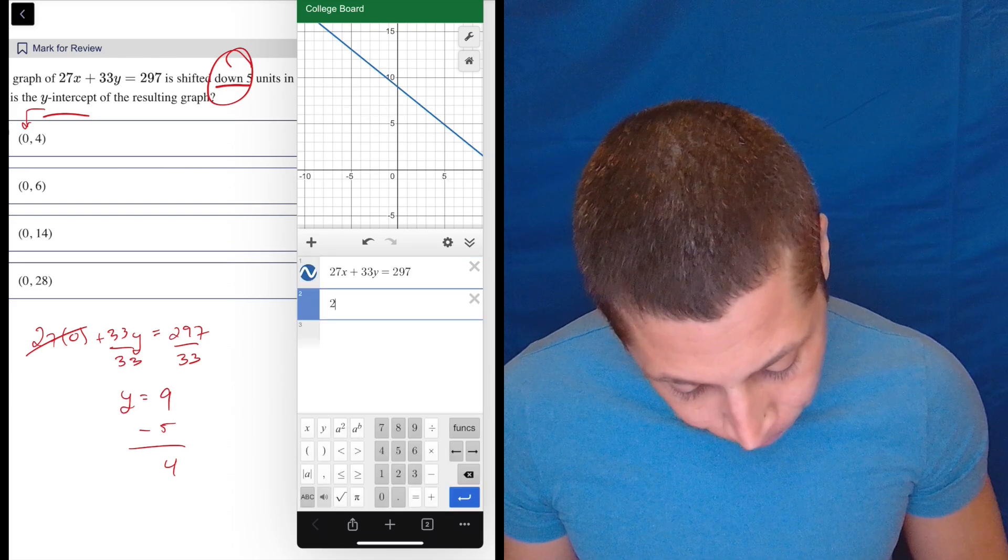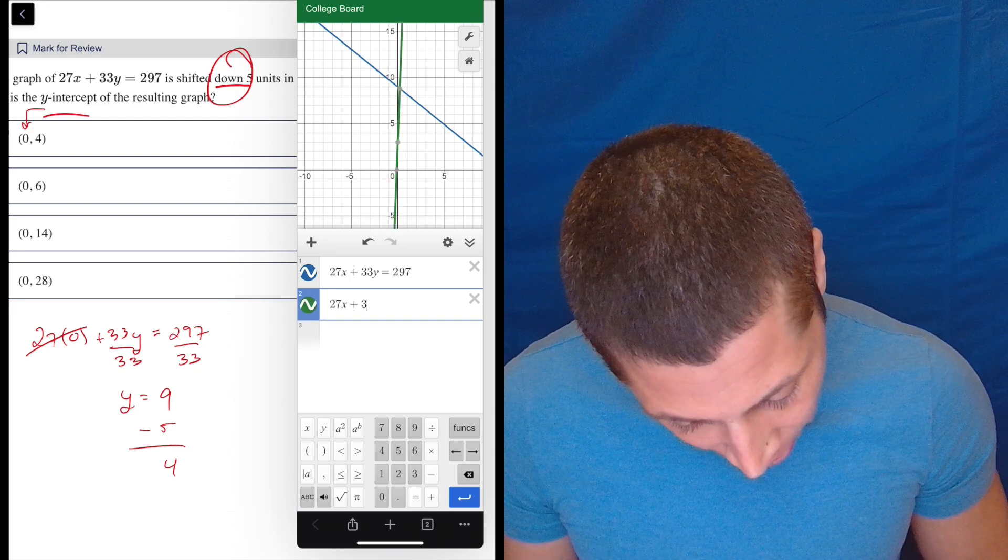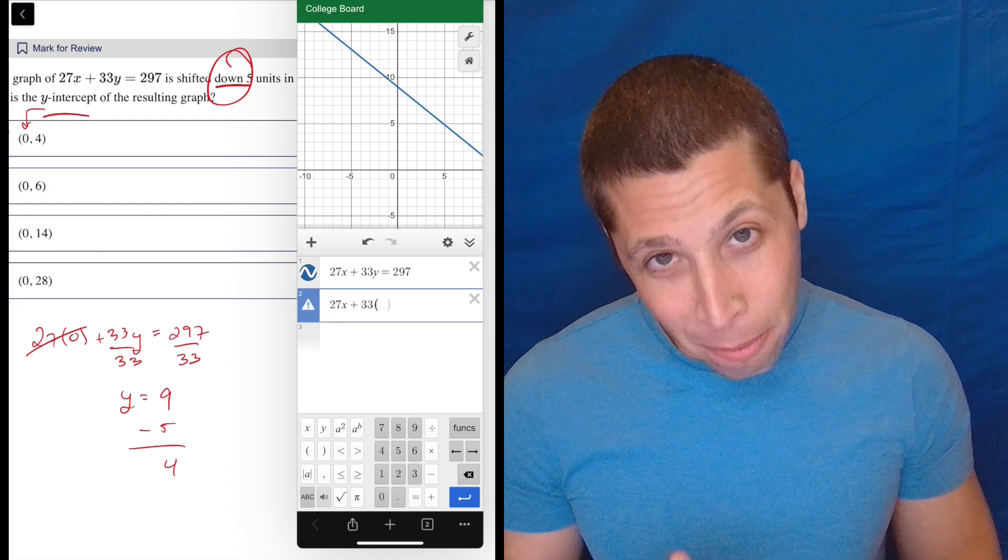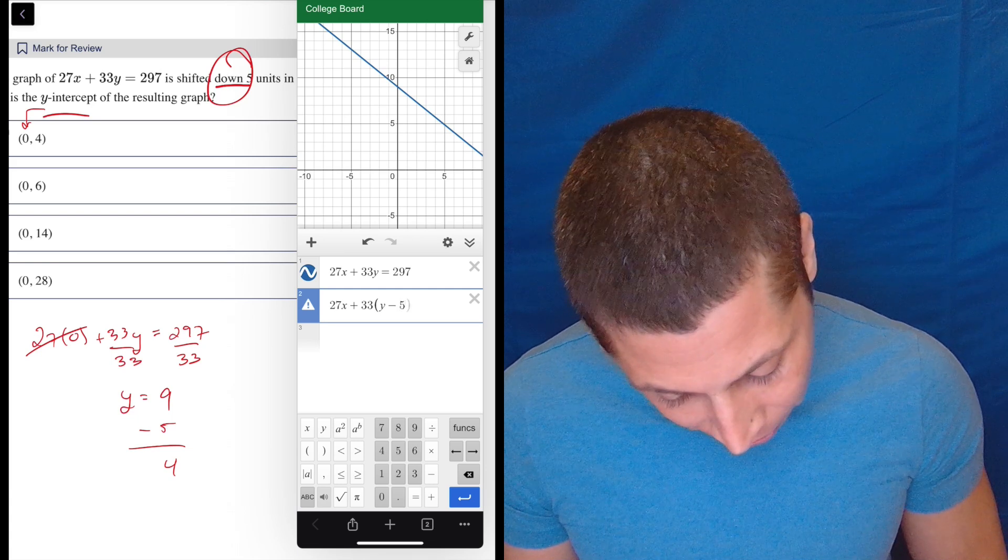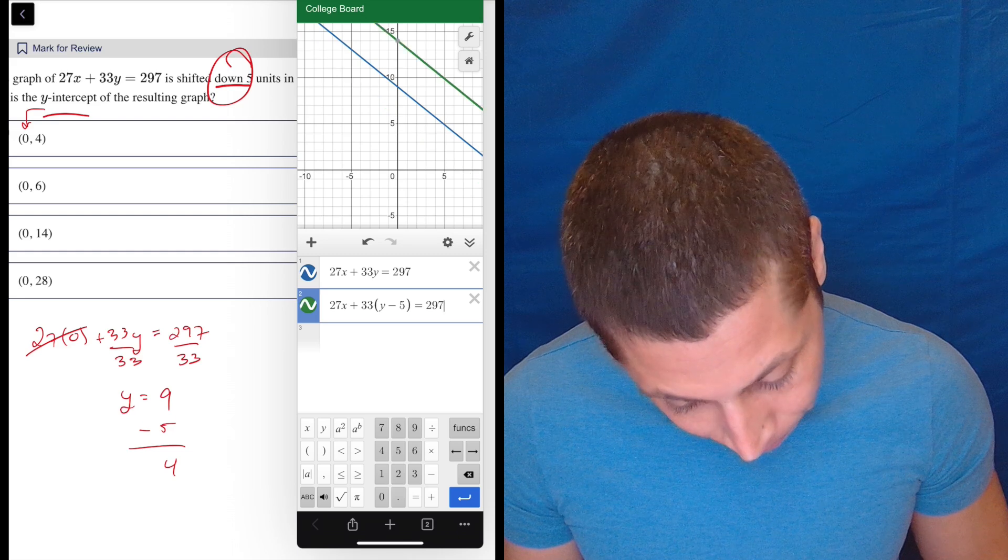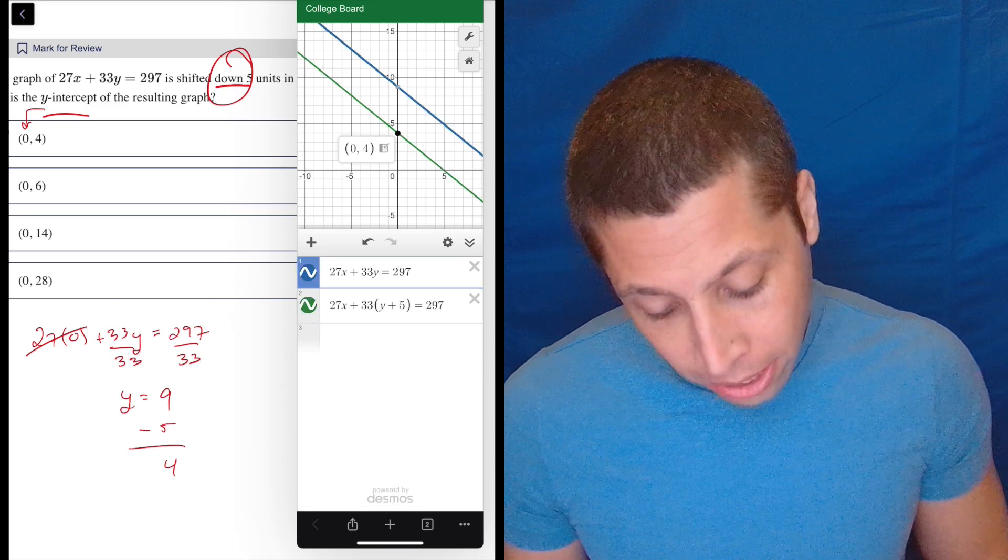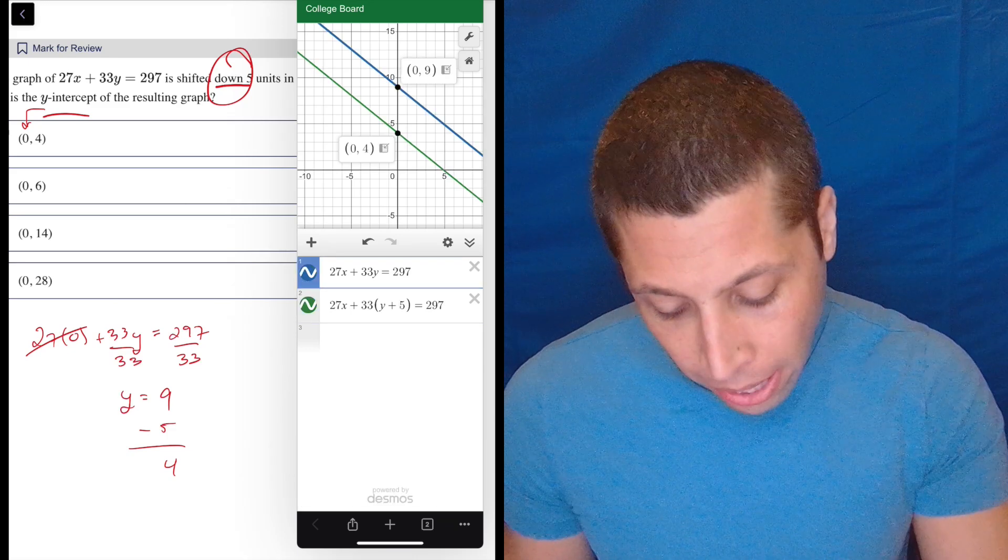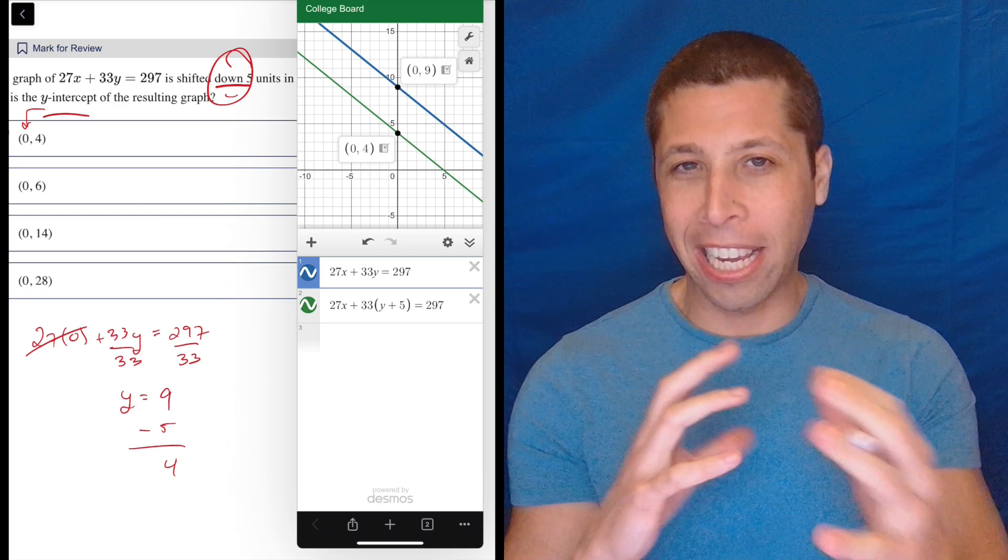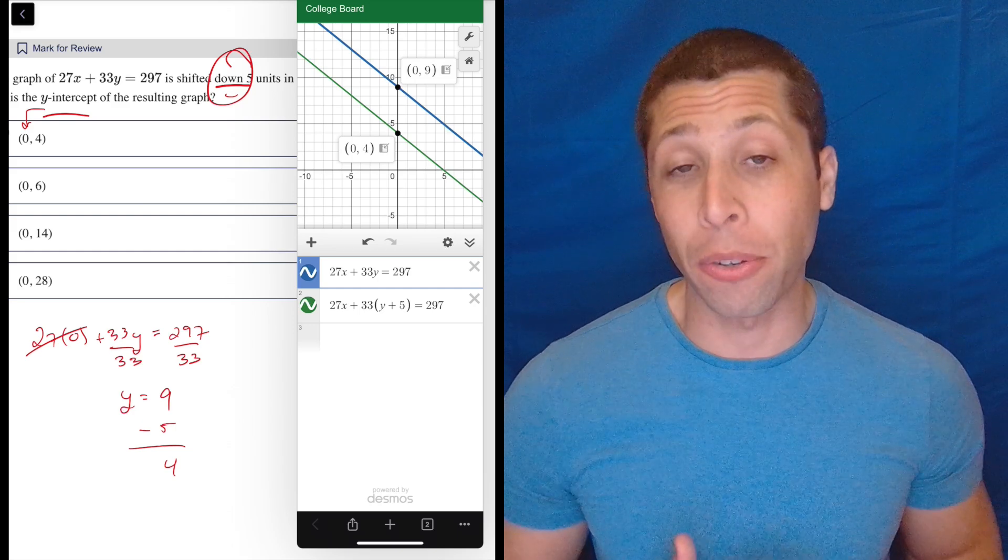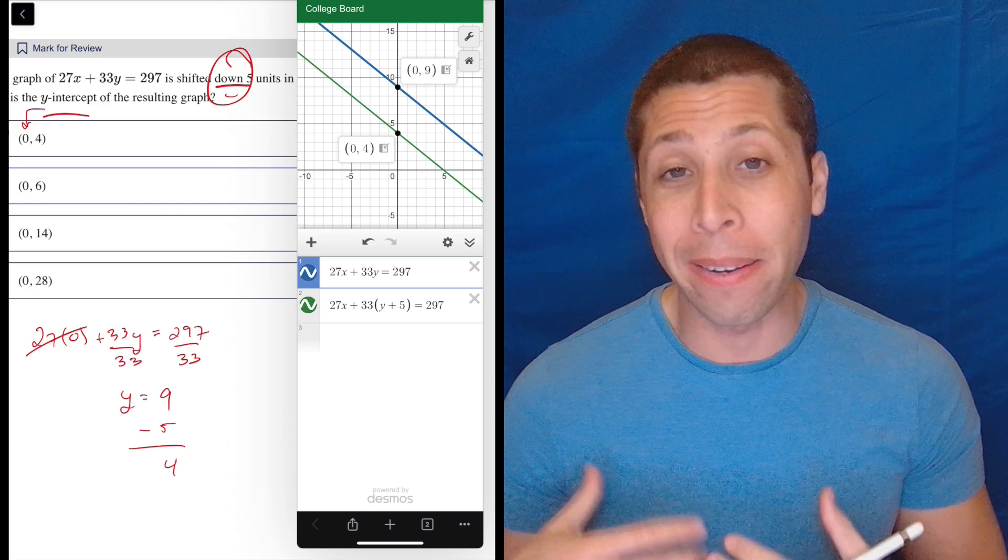In order to really shift it algebraically, what we would need to do is 27x plus 33, and then because the y isn't alone, it has to behave a little bit like an x when we do shifts. So y plus 5 equals 297. See, it's a plus because they're shifting down. So you think of that as a minus, right? But because the y isn't alone, the shift has to get incorporated into the y in the same way that when we shift left and right, we incorporate it into the x by putting it in these parentheses. And when it's in the parentheses, like most things in parentheses with algebra, it's the opposite.